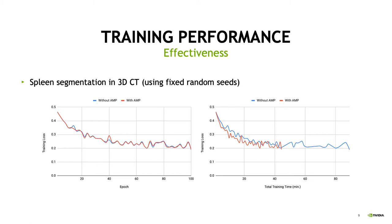Here we show the training performance of spleen segmentation in 3D CT. Again, we fix the random state during training for fair comparison. In the left figure, we can see that the training loss curves of training with AMP and without AMP are almost identical across different epochs. On the right-hand side, the total training time with AMP is reduced by a large margin compared to training without AMP.